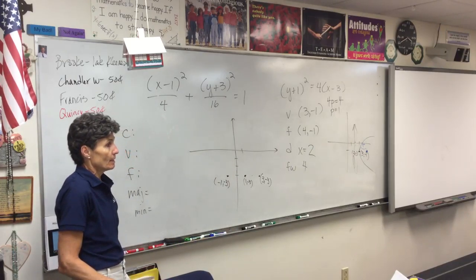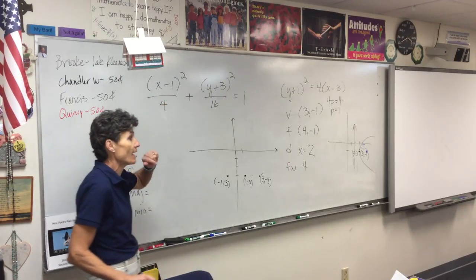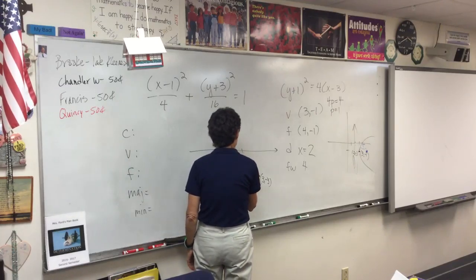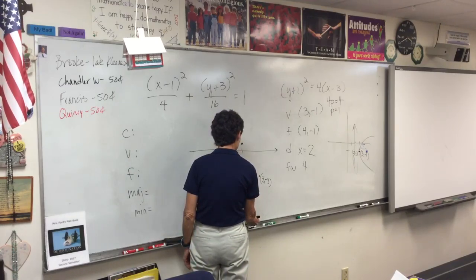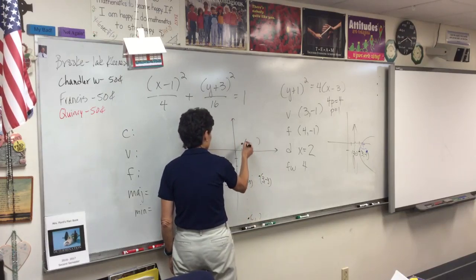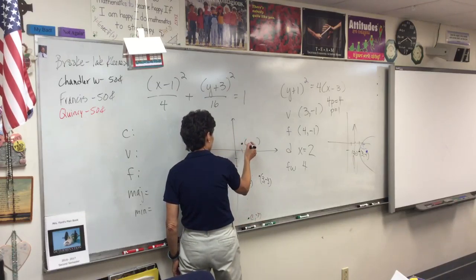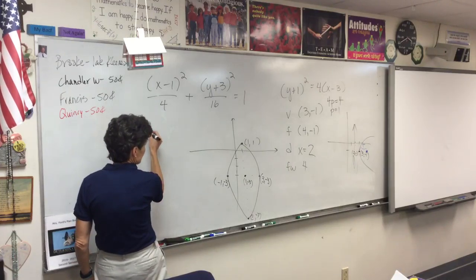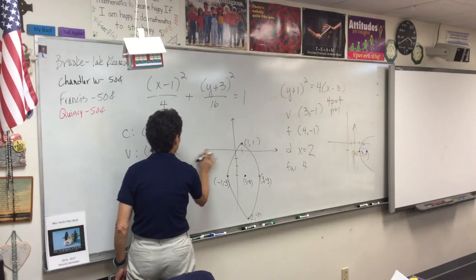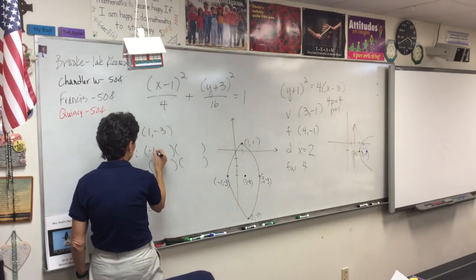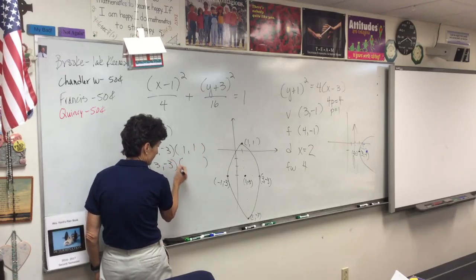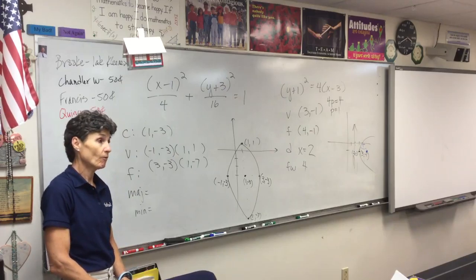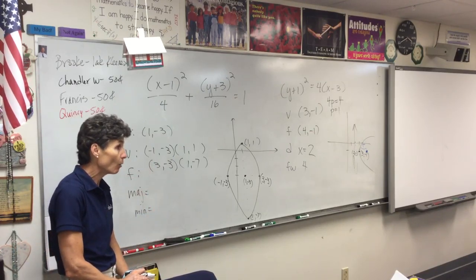Feel free to use graph paper. The 4 underneath the x means I'm going to count sideways 2 units. So where will I be if I count sideways 2 units? That would be (3, −3) and (−1, −3). Now, if 4 underneath the x told me to go back and forth 2, what do you think 16 under the y means? Up and down 4. So we count: 1, 2, 3, 4 up and 1, 2, 3, 4 down. What are the coordinates of these points? (1, −7) down here and (1, 1) up top.